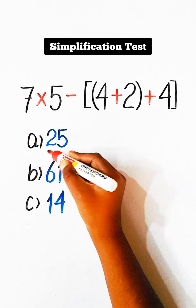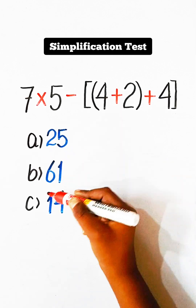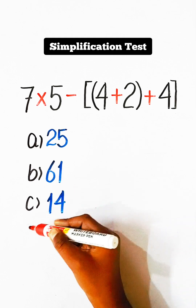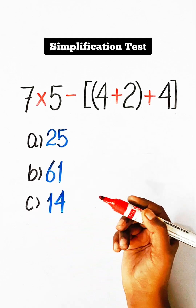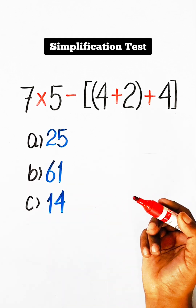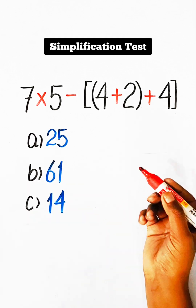Option A: 25, Option B: 61, Option C: 14. So let's solve this.